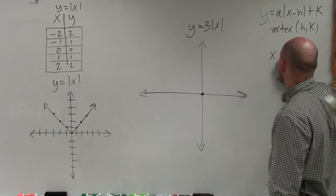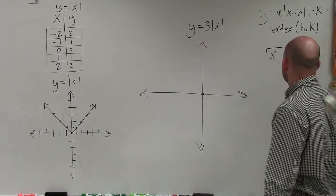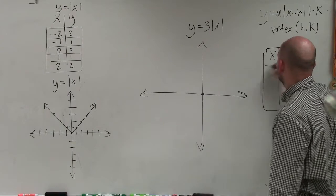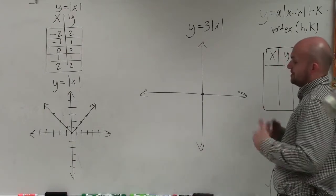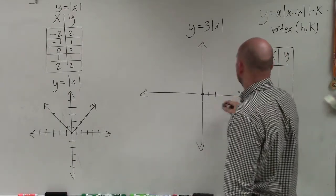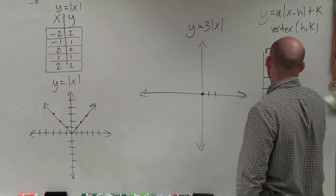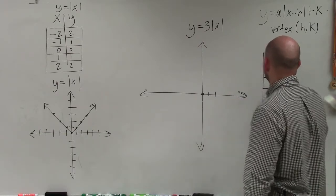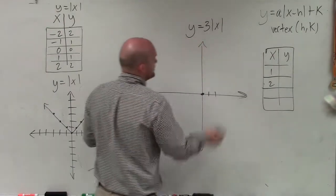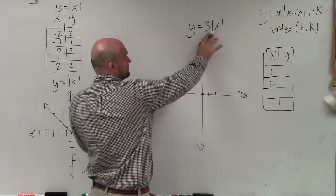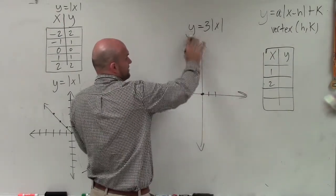So if I want to create a table of values for this equation, basically all I need to do is choose points to the left or to the right. And I'll choose points to the right. I'll just choose two points. So I'll choose 1 and 2. Then, simply all I do is plug in my x variable, or my input, my x in for x, and then solve for y.